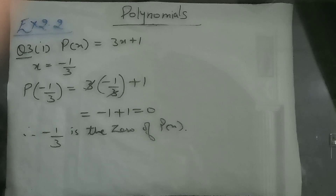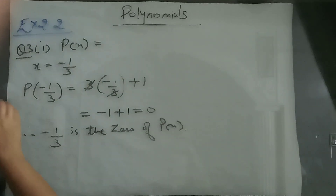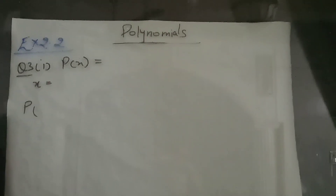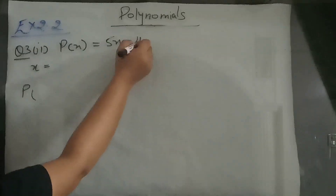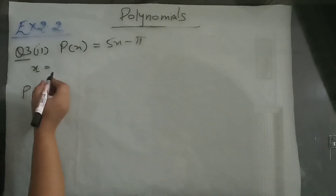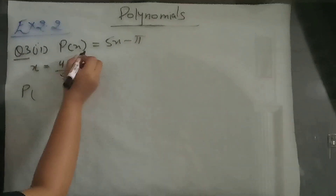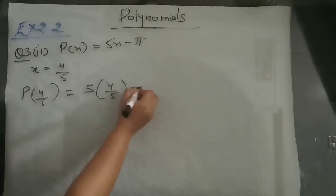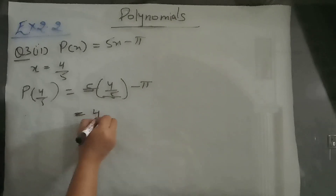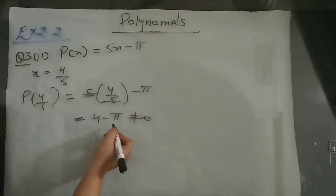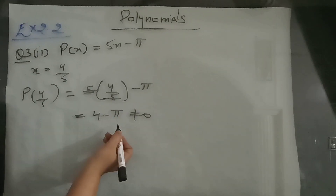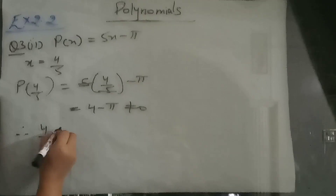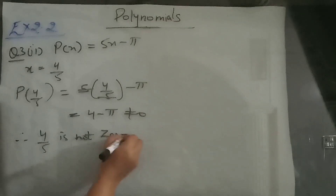Next part, second part. We have p of x is equal to 5x minus pi, where x is 4 upon 5. So put 4 by 5 in place of x: 5 into 4 upon 5 minus pi. 5 and 5 got cancelled, giving 4 minus pi, which is not equal to 0. Don't substitute the value of pi — we just verify whether it is the zero or not. So 4 by 5 is not the zero of p(x).